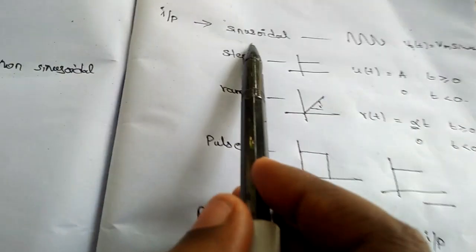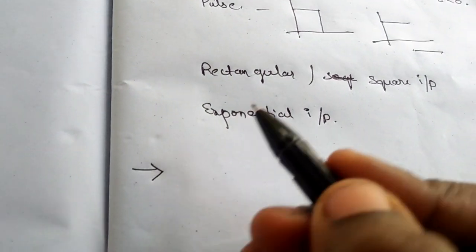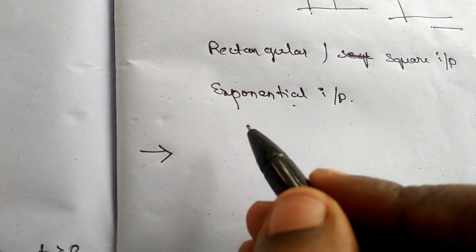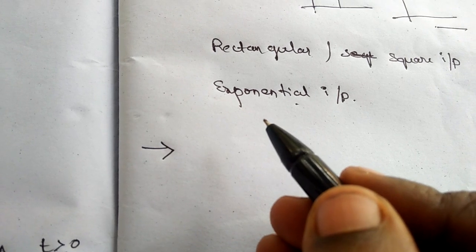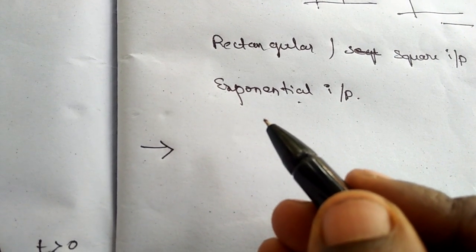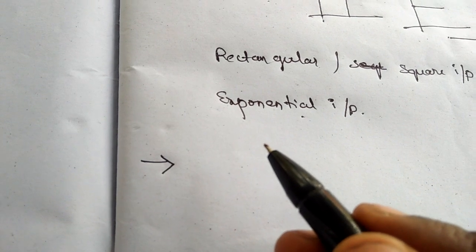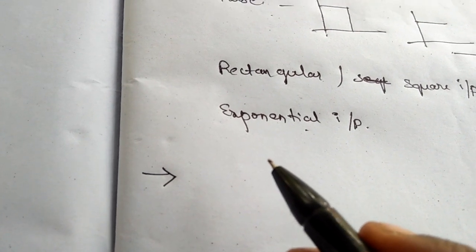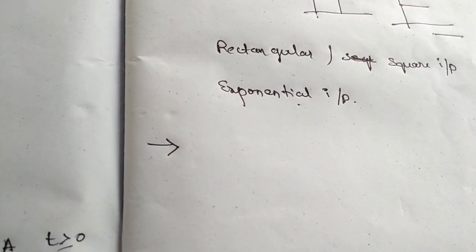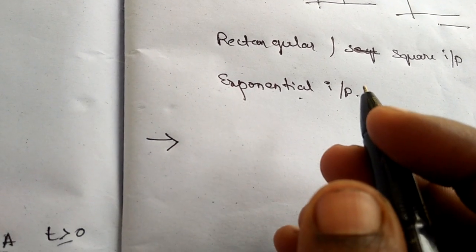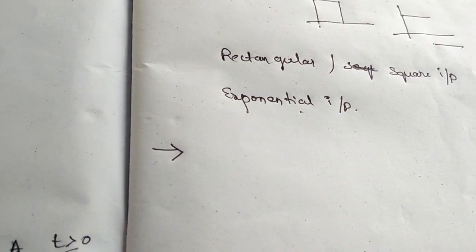What about sinusoidal? Whenever we supply a sinusoidal input to a linear network, the shape will not alter but the gain will be changed — that means the output may increase or decrease. By that way, we are finding the gain values for sinusoidal.